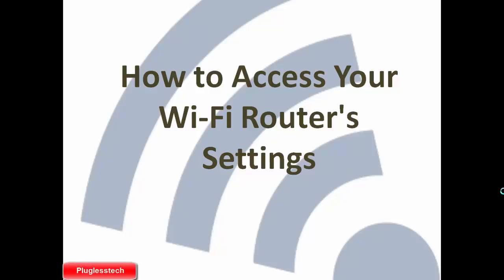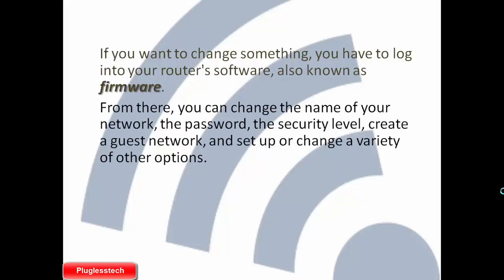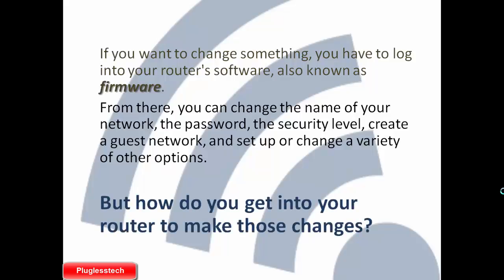How to access your Wi-Fi router settings. If you want to change something, you have to log into your router software, also known as firmware. From there you can change the name of your network, the password, the security level, create a guest network, and set up or change a variety of other options.